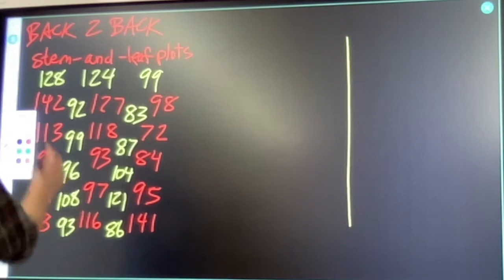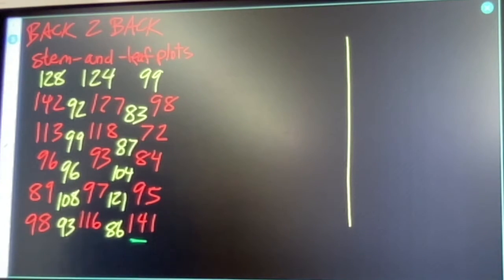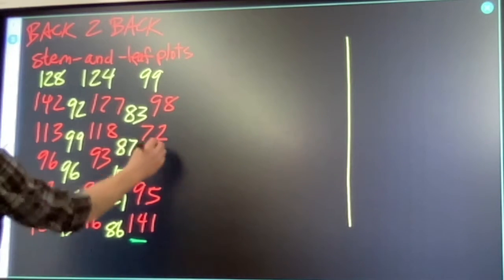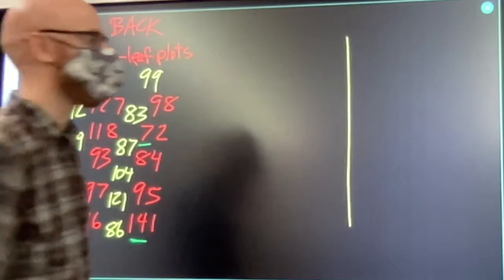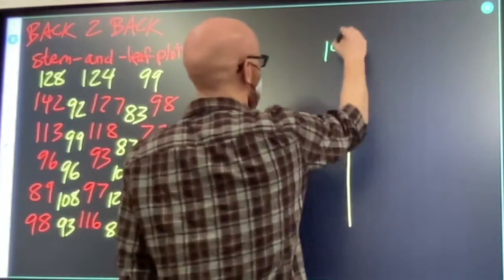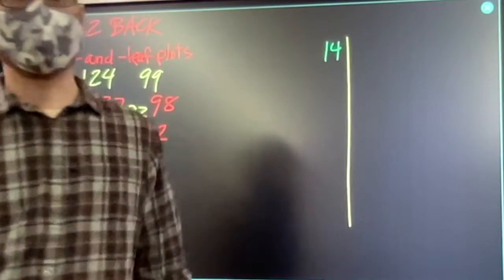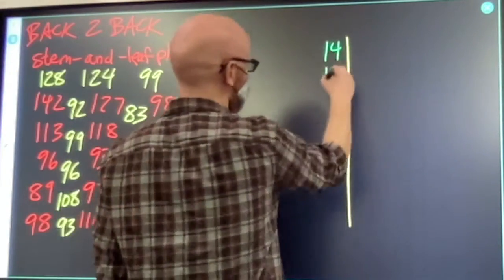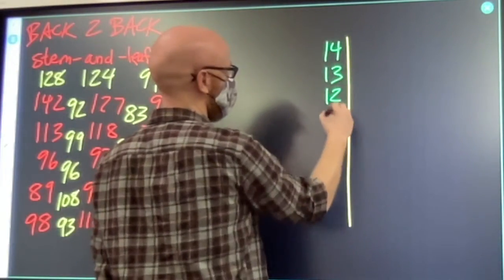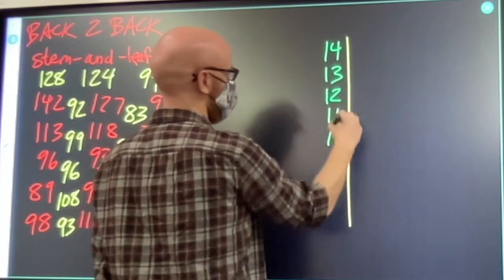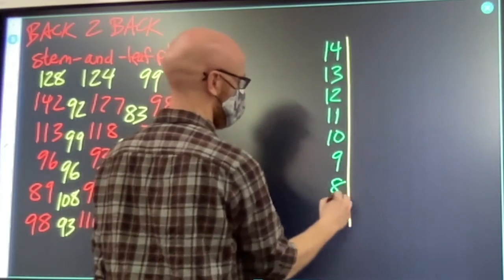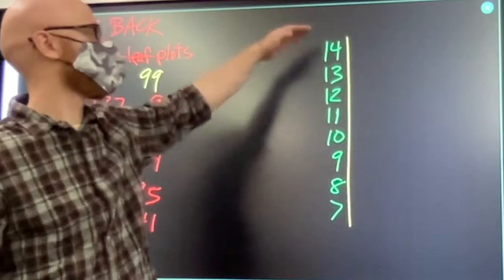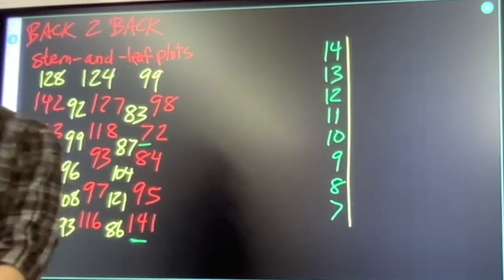We've got 140s. And find your smallest number. We've got 70s. So I'm going to set up my stem starting at 140. Remember, 10s digits in the stem. 14, and I'm going to count down to 7. That's because I have 140s and I have 70s.